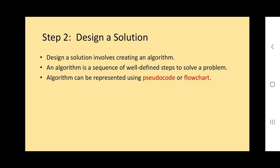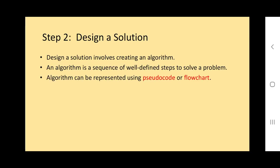Step two is design a solution, more commonly known as creating or designing an algorithm. The algorithm exists in two forms: pseudocode and flowchart. Algorithm can be represented by pseudocode and flowchart. Pseudocode is a 'false code' - it resembles real code. It's written in text form, in English-like statements. Flowchart is in graphical diagram form - it uses drawings.